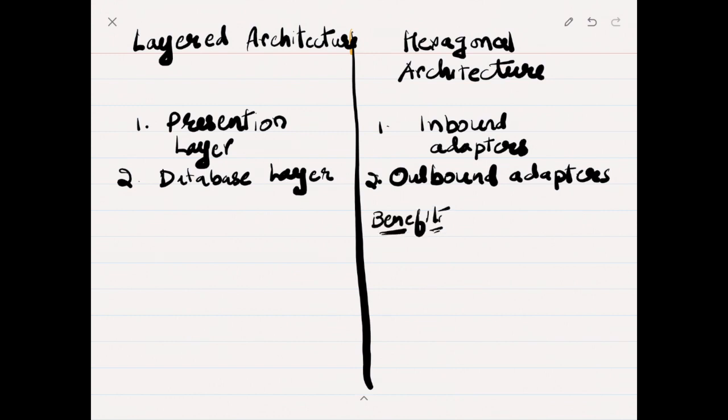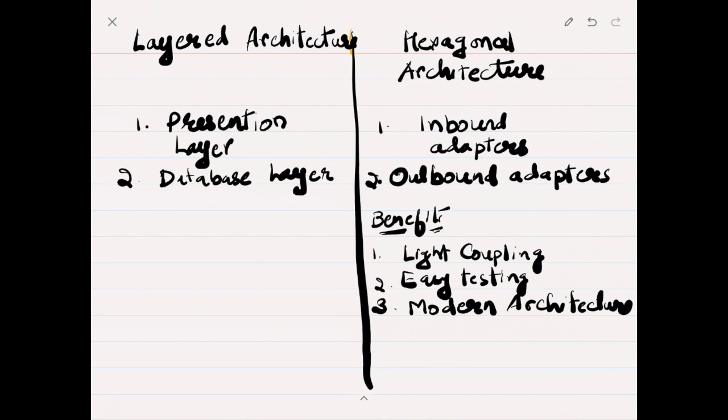What are the benefits of hexagonal architecture over layered architecture? Hexagonal architecture looks very close to clean architecture where the business is lightly coupled because of the adapters. Therefore the business logic is easy to test and it is very close to the modern architecture which is clean architecture and it's more friendly towards the microservices architecture.